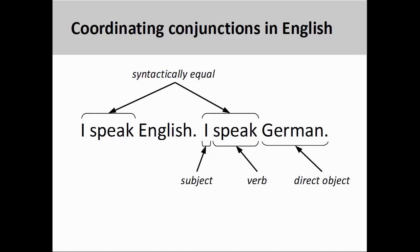The second sentence, 'I speak German,' manifests the same syntax, although the direct object of the verb, 'German,' is different. Indeed, the first two elements of the sentence are syntactically equal. That is to say, the subjects and verbs of both sentences are exactly the same.